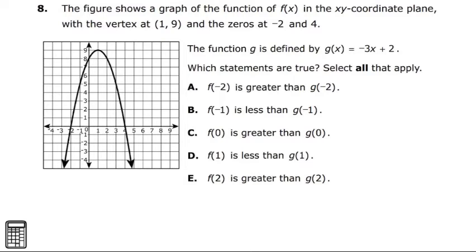Welcome to an Algebra 1 sample question number 8. This is for the state exam. The figure shows a graph of the function f(x) in a coordinate plane. That is the parabola that you see down there facing downward with the vertex at 1, 9 and the zeros at negative 2 and 4.